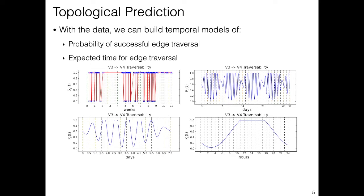This data can then be used to build, for each edge in the topological map, a temporal model that is able to predict, at a specific time, what is the probability of successful edge traversal, and what is the expected time for that edge traversal.